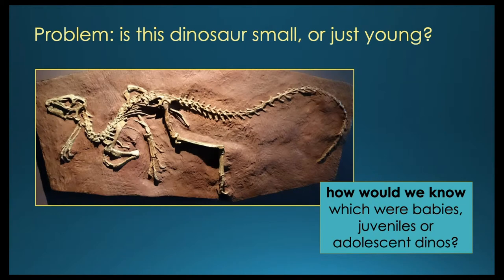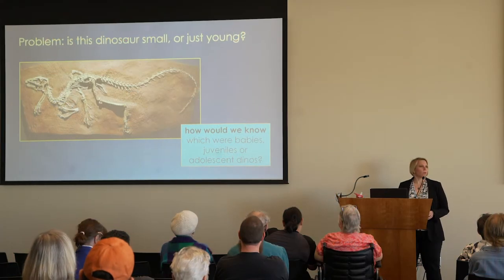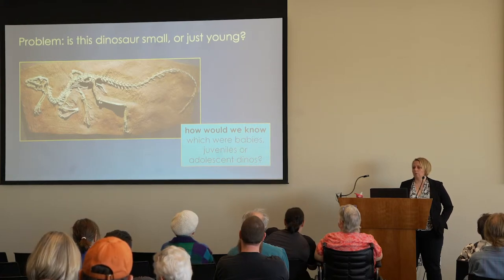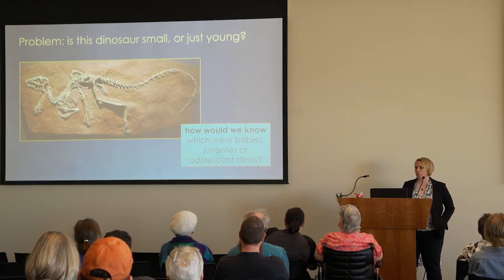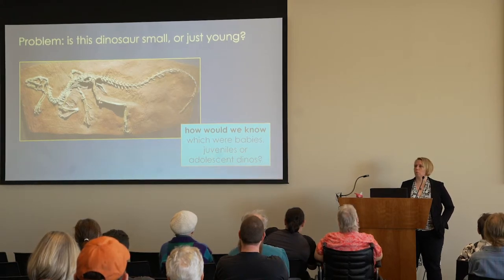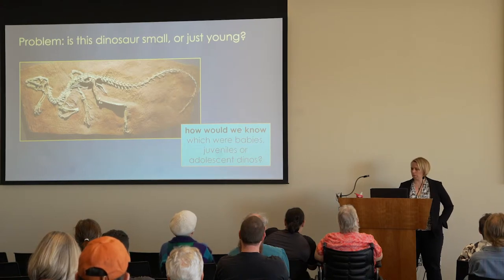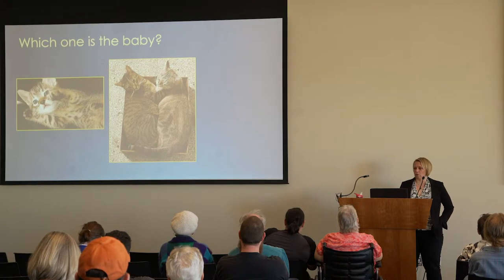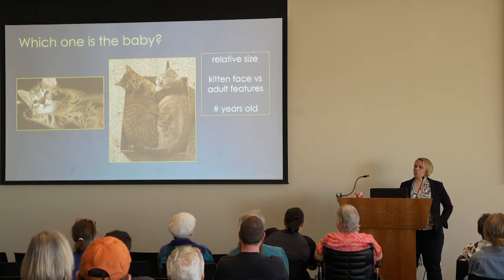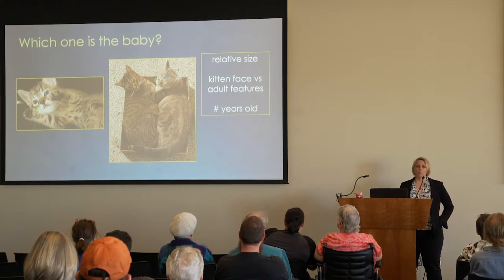One problem when we try to reconstruct life stories for dinosaurs is figuring out where in its life story a specimen is. This dinosaur called Heterodontosaurus is maybe three to four feet long from tip of snout to tail — is this a little dinosaur, or is it a baby of a bigger species? How would we know which ones were the babies, the teenagers, the adults? It's easy with living animals like cats because we can compare relative size, the shape of the face, and we can just watch them live their lives.